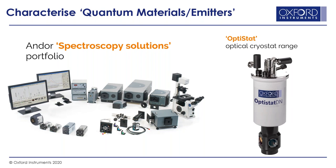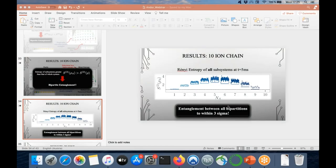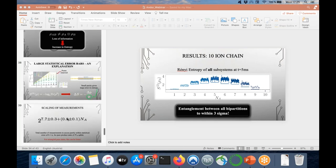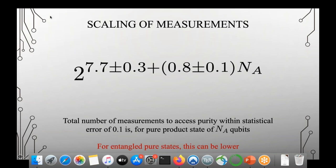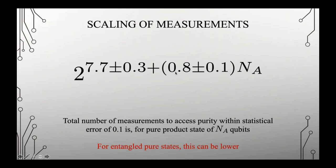That's a really good question. The scaling with subsystem size N_A is approximately 7.7 × 2^(0.8 N_A). The 7.7 is effectively a constant scaling factor at the front. One more thing to note: for entangled pure states, the scaling can actually be better, going down to about 2^(0.6 N_A). So for more separable states the scaling is a little bit worse.